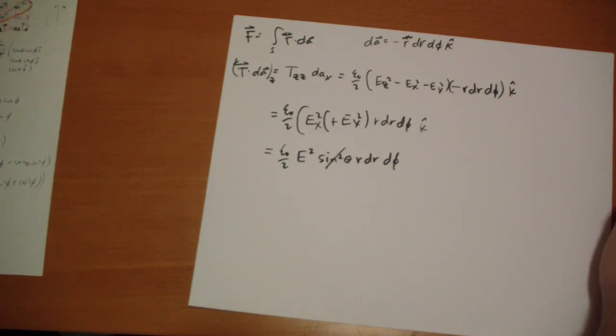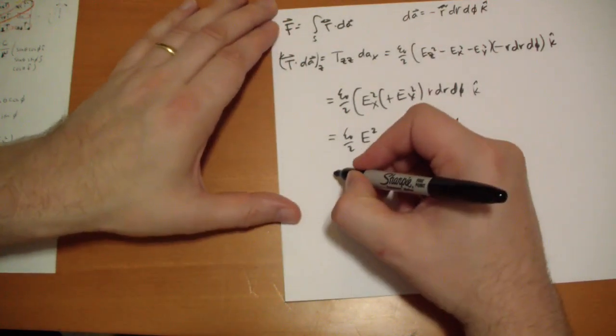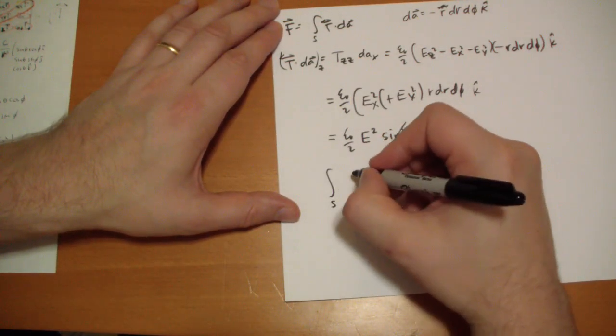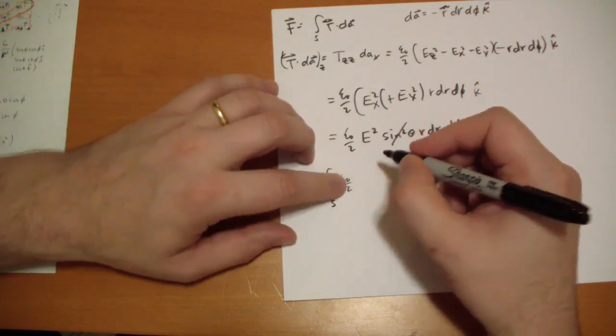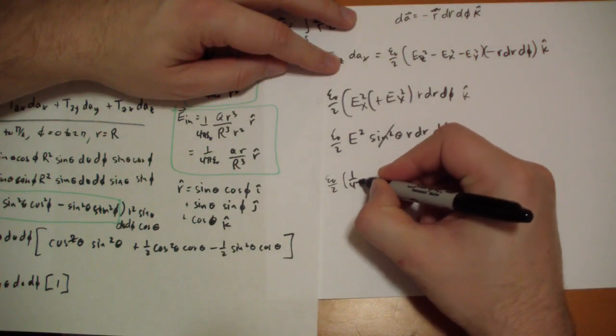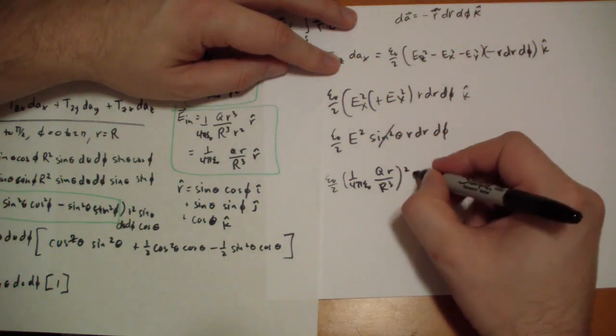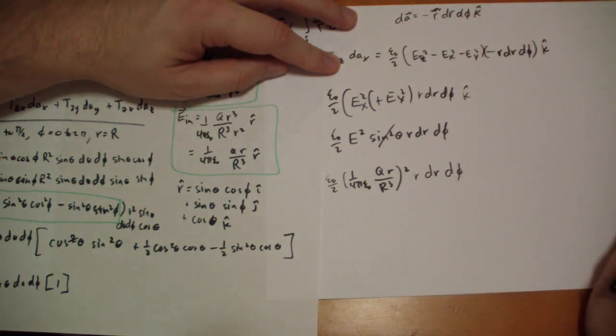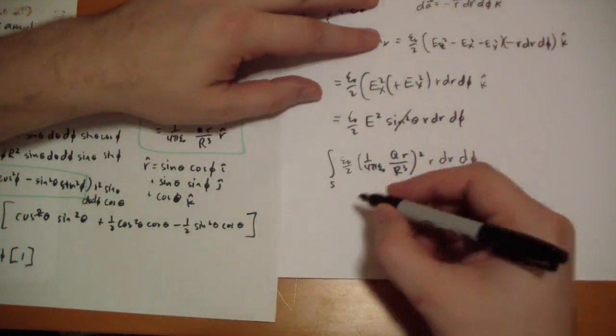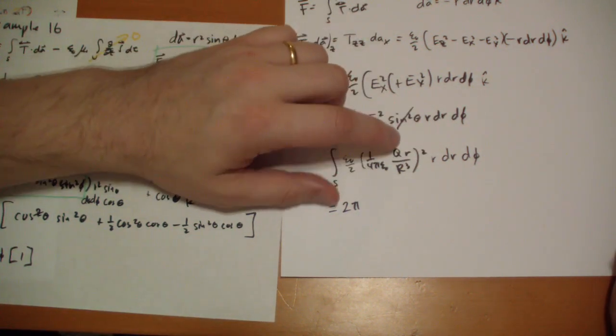So we're left with... I feel like I'm missing something, but I'm not. Yes, there's an extra factor of little r. So now we have the integral along the surface of this e squared. What's e on the inside? So it's 1 over 4 pi Q r over r cube squared r dr dPhi. Once again, the integral over dPhi is just going to be 2 pi.